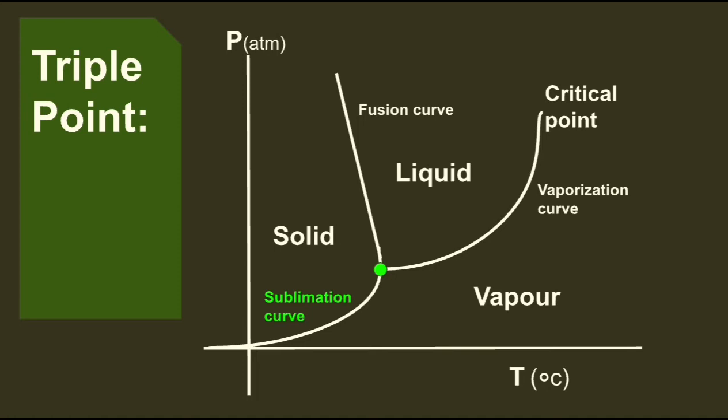You know that solid changes into liquid by melting, and liquid changes into gaseous state by vaporization. And if a substance directly changes from solid state to gaseous state, we call that sublimation. For example, dry ice—it directly changes from solid state to gaseous state.